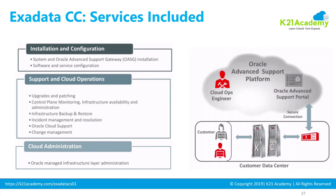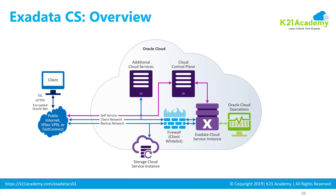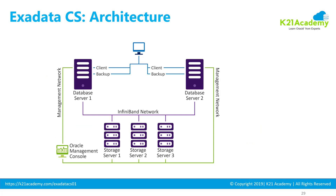This is the third video in a multi-part video series on Exadata Cloud Service. In the first video I covered a high-level overview of Exadata Cloud Service, and in the second video I covered the architecture, including database servers like Dom0 and DomU, storage servers, InfiniBand, and three different types of networks.